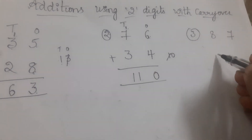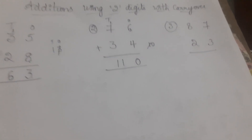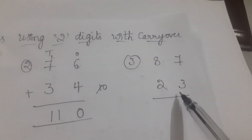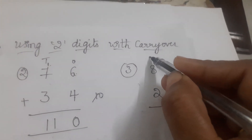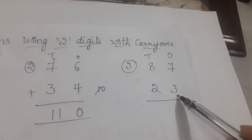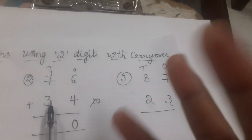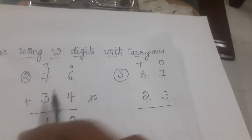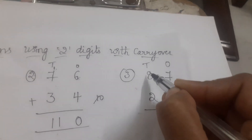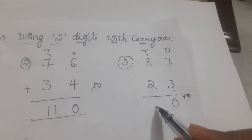Third one is 87 and 23. Here you have to add 87 with 23. This is the tens column and this is the ones column. In the ones column, seven and three are there. Seven is bigger than three, so you have to keep seven in mind and open three fingers. Seven, after eight, nine, ten. Write zero in ones place, one in tens place. Eight plus one is nine; nine plus two is ten, eleven. Write eleven here.